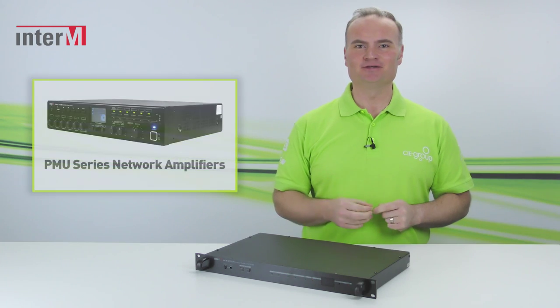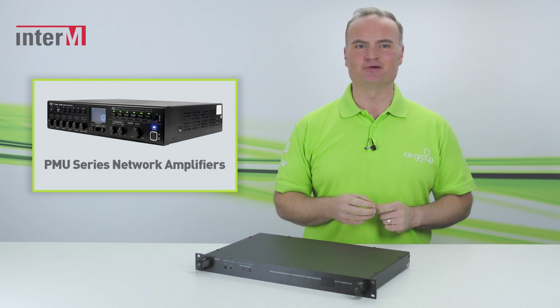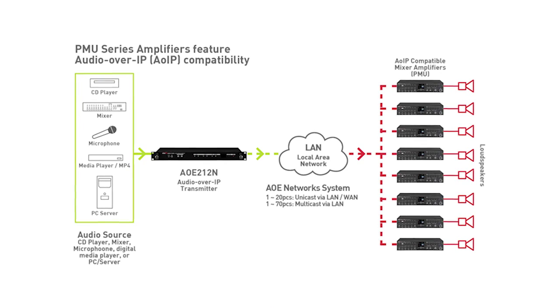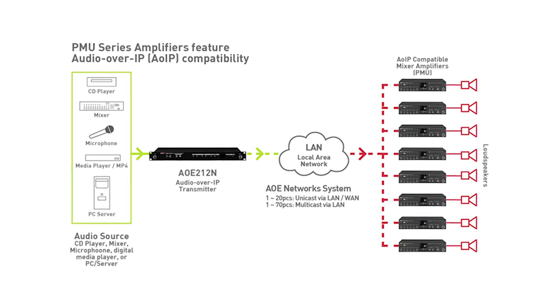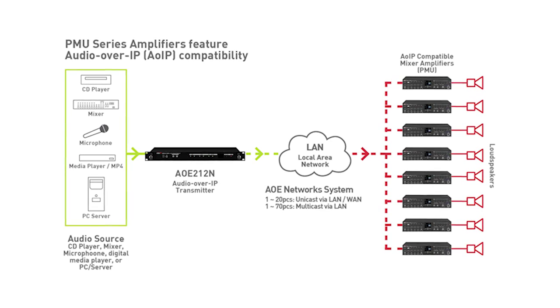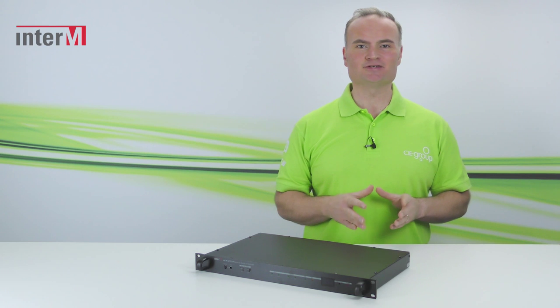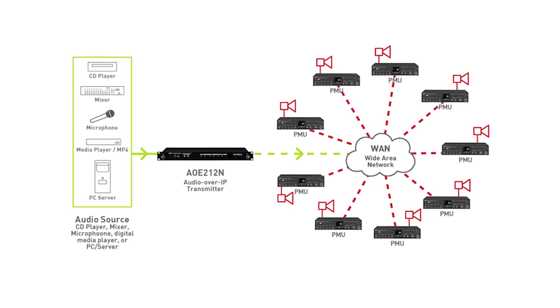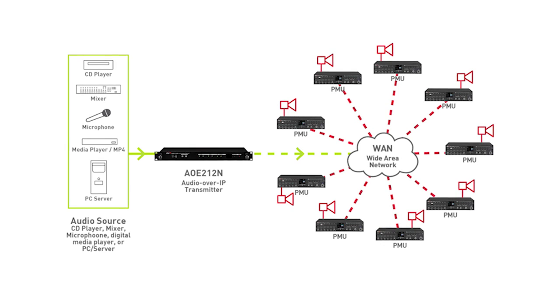In this instance, an AOE212N — which is a bi-directional transceiver, i.e. transmitter or receiver configurable — would be placed at both the source end of the system and the amplifier end of the system. The AOE212N can also be used in conjunction with InterM's new PMU series of IP addressable mixer amplifiers. In this case the AOE streamer is only required at the source end of the system, with the PMU devices acting as both audio over IP receivers and mixer amplifiers. This also applies to larger wide area network systems where either the AOE212N or a PMU network amplifier can be utilized as the audio over IP receiver.